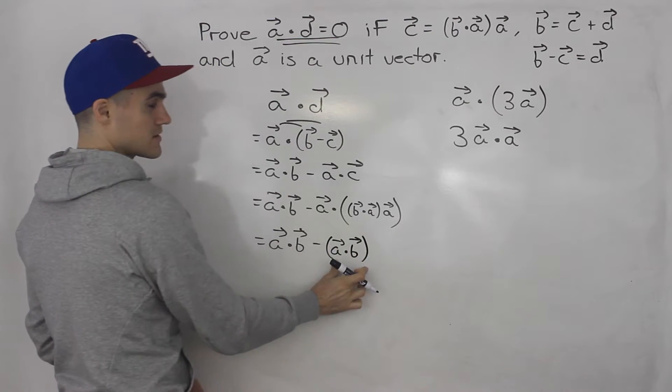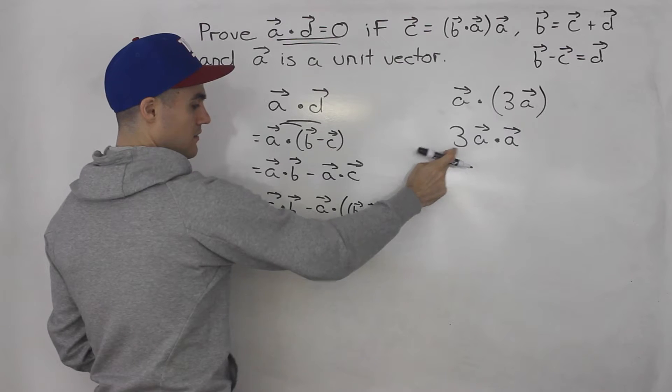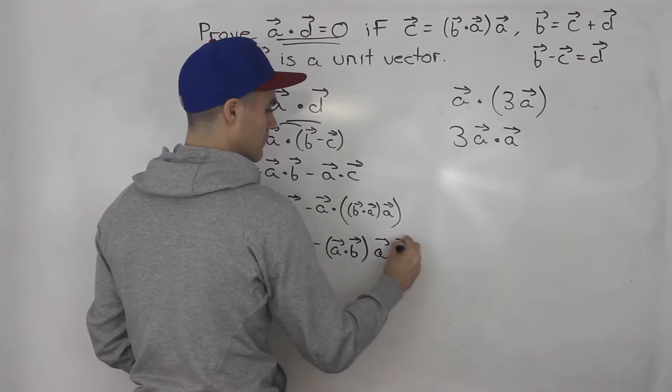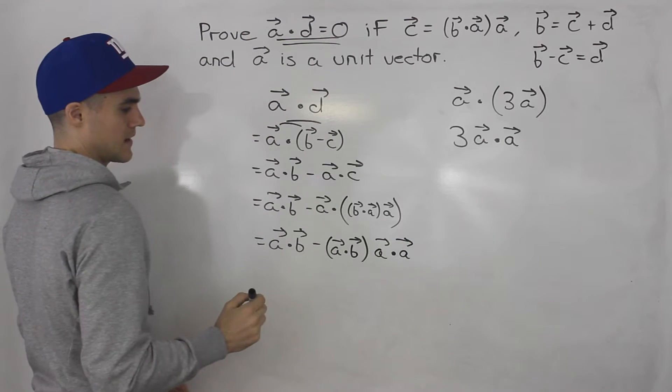So that there is a scalar, that's like this three here, and then we end up with a dot vector a, like that.